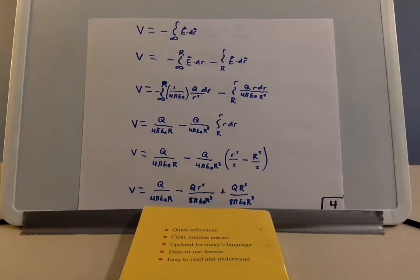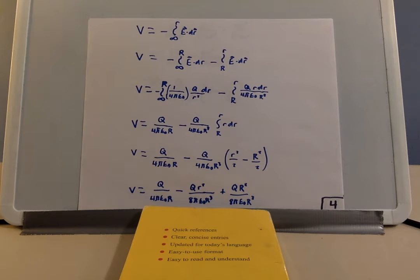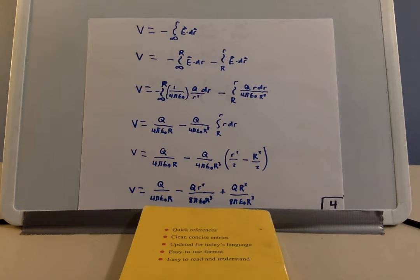Simplifying a little further, that first term remains q over four pi epsilon naught r. We subtract q over four pi epsilon naught big R cubed, and after taking the integral, that comes out to r squared over two minus big R squared over two. We then distribute through that section in parentheses, giving us: minus q little r squared over eight pi epsilon naught big R cubed, plus q big R squared divided by eight pi epsilon naught big R cubed.